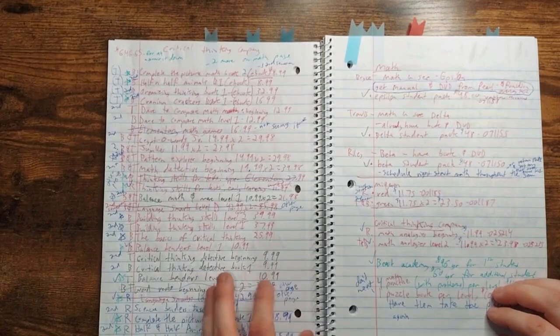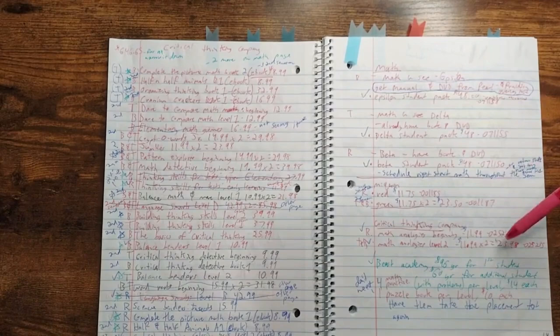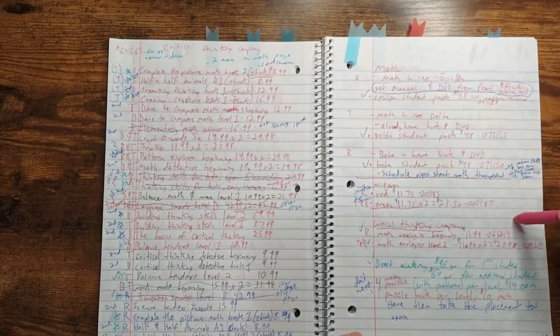For math, I have what each of my kids are doing. So we're doing math you see as our main curriculum. We also like to use Mequon and Critical Thinking Company books. And this year I got Beast Academy as a supplement, so I'll just have my oldest two do it maybe two or three days a week.